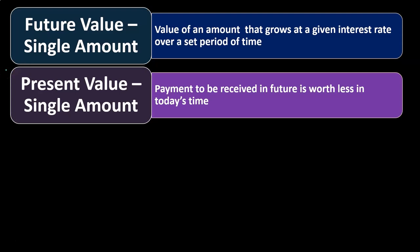We're comparing single amounts versus annuity amounts. We have four concepts in place: the future value of a single amount, the present value of a single amount, and then the same two for annuities.